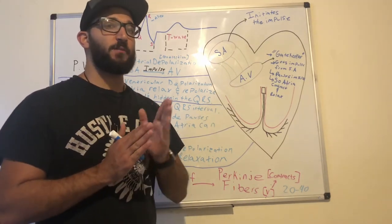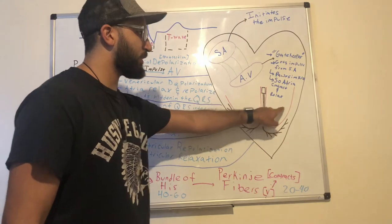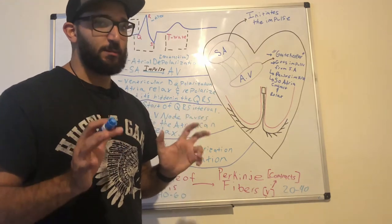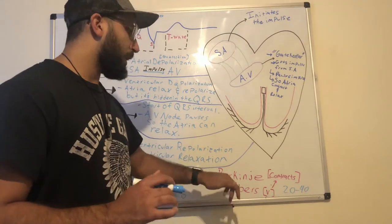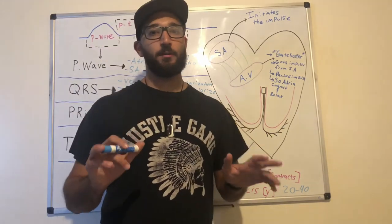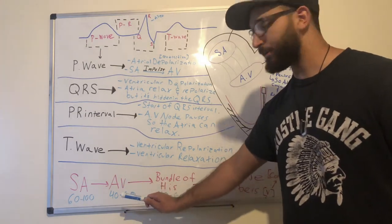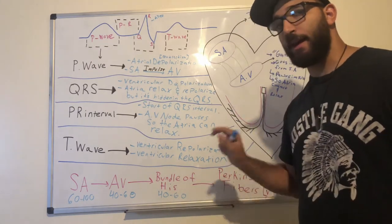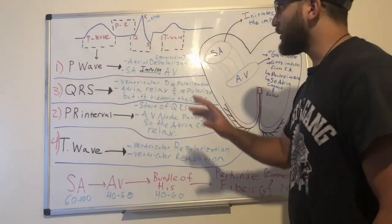The bundle of His branches off into a left segment and a right segment — a left branch and a right branch. After the bundle of His has received the impulse, it is then sent to the Purkinje fibers. The Purkinje fibers are located within the ventricles, and this is where the ventricles contract at 20 to 40 beats per minute. To reiterate: the SA node initiates the impulse, the AV node regulates it, it passes through the left and right bundle branches, and then reaches the Purkinje fibers where ventricular contraction occurs.